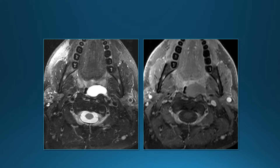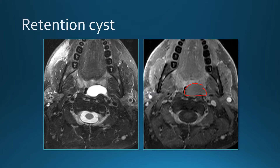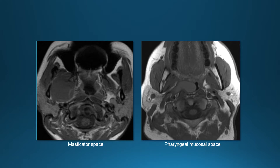On post-contrast images with fat suppression there is no enhancement with contrast, so this represents a retention cyst — you can get a retention cyst in any mucosal space, and the key features are fluid signal and no contrast enhancement. To contrast lesion locations: the masticator space lesion displaces the parapharyngeal fat posteriorly and medially, whereas the pharyngeal mucosal space lesion displaces the parapharyngeal fat laterally.